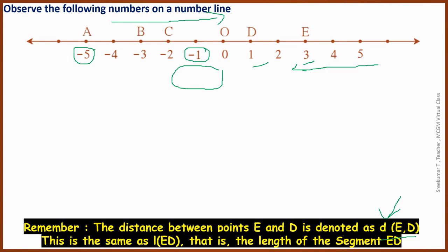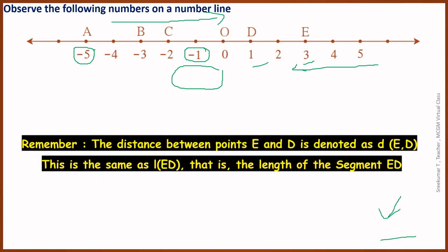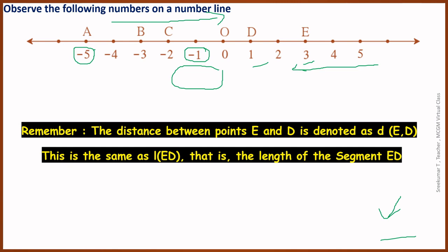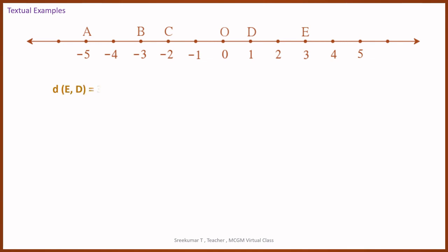Remember that we just understood what is meant by coordinate of points. Second point is distance between coordinate points. Let us move ahead. Some more examples are there in your textbook.